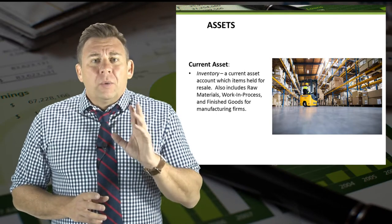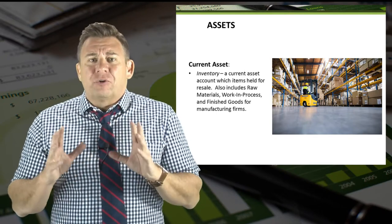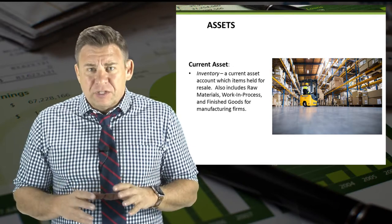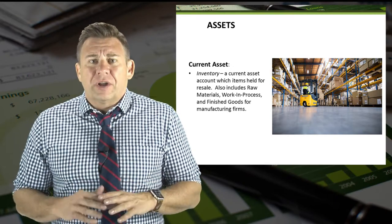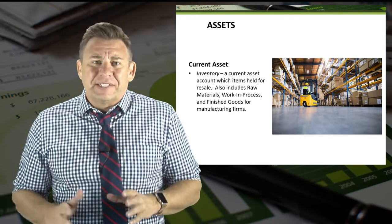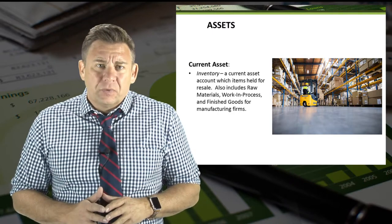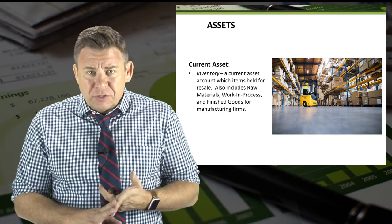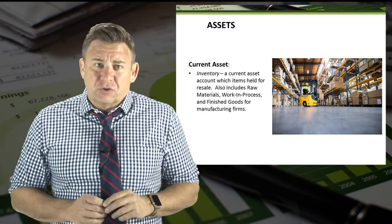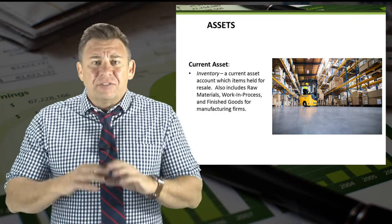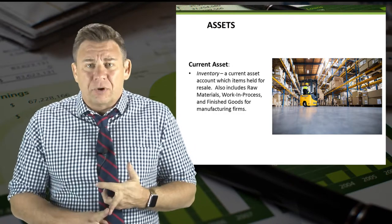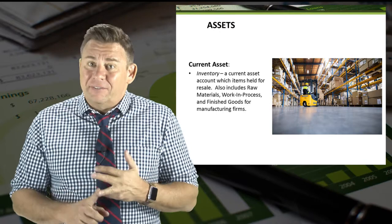We will introduce the accounting for inventory in this course. For merchandise firms, inventory is a current asset which includes items held for resale. Manufacturing firms, which we will learn about in the managerial accounting portion of this course, have several inventory accounts including raw materials, work in process, and finished goods.